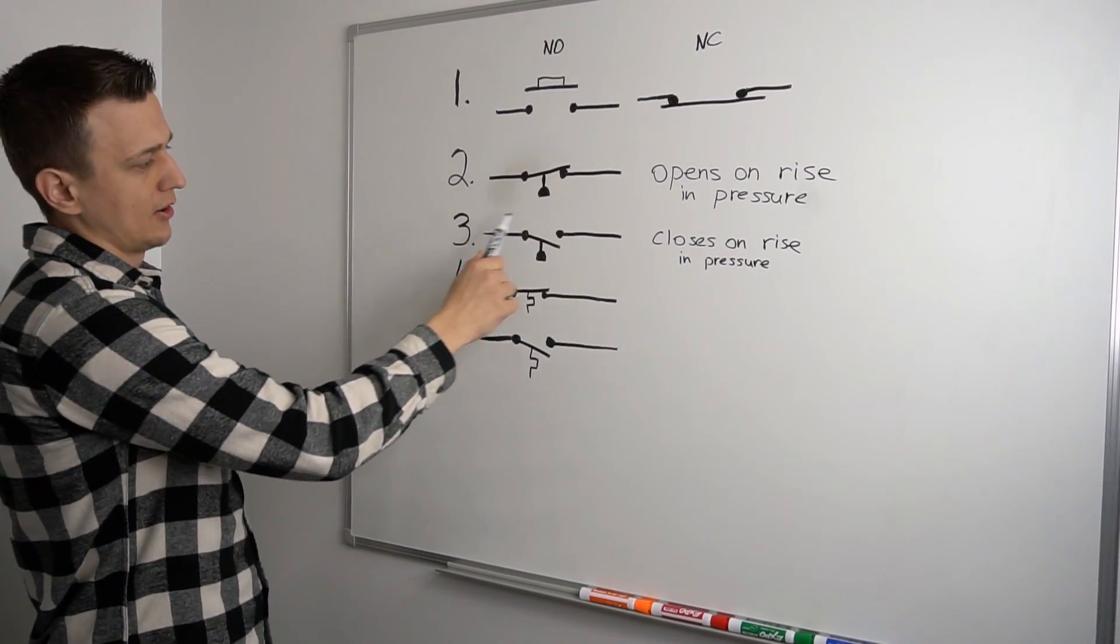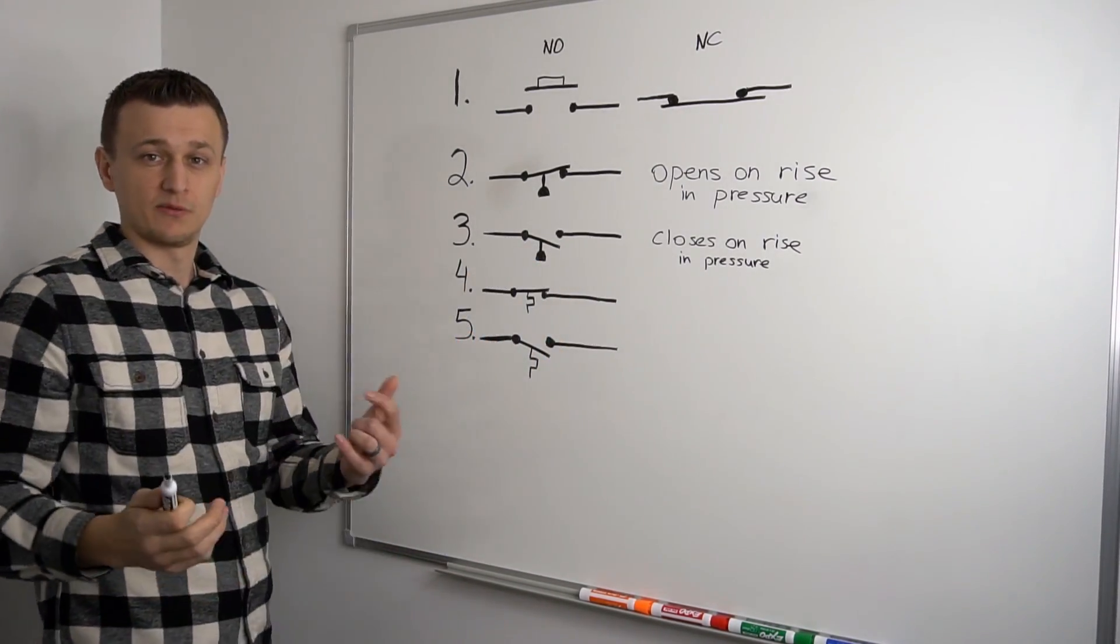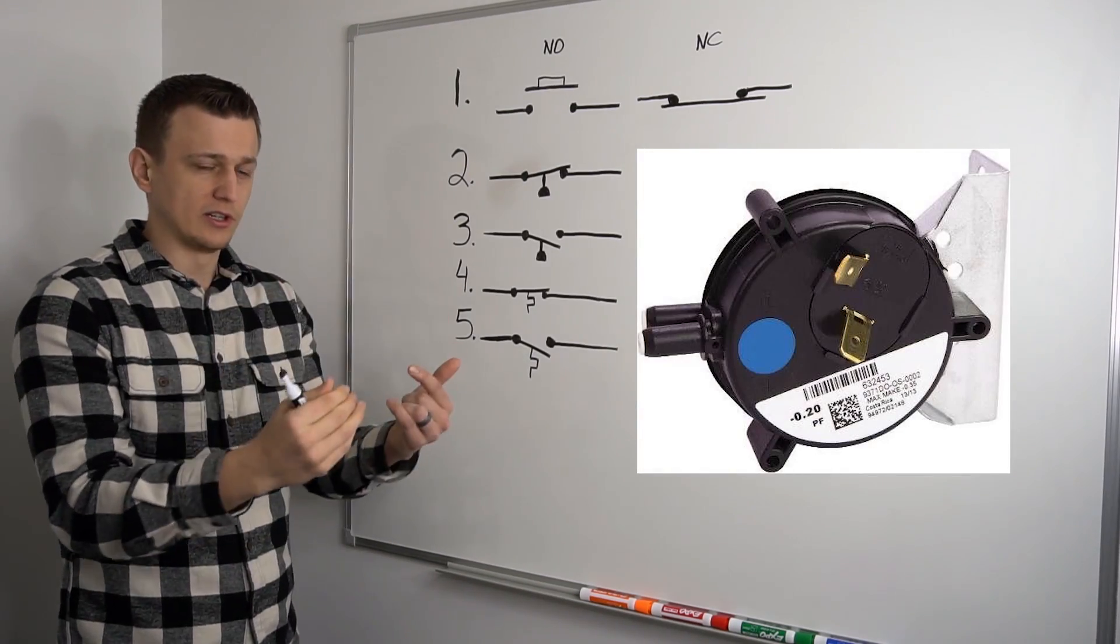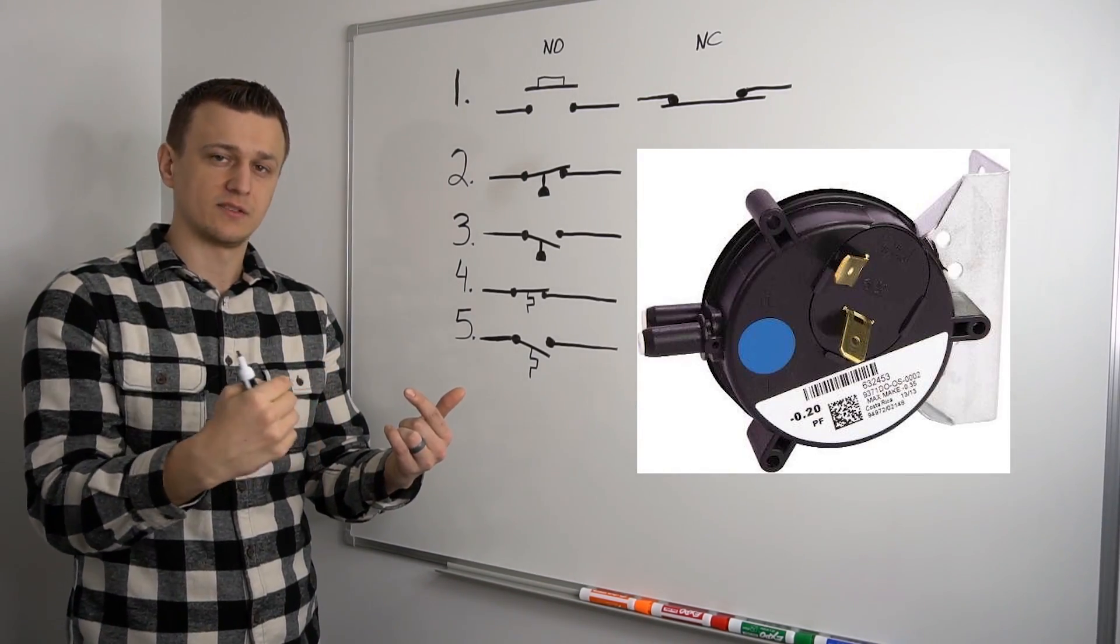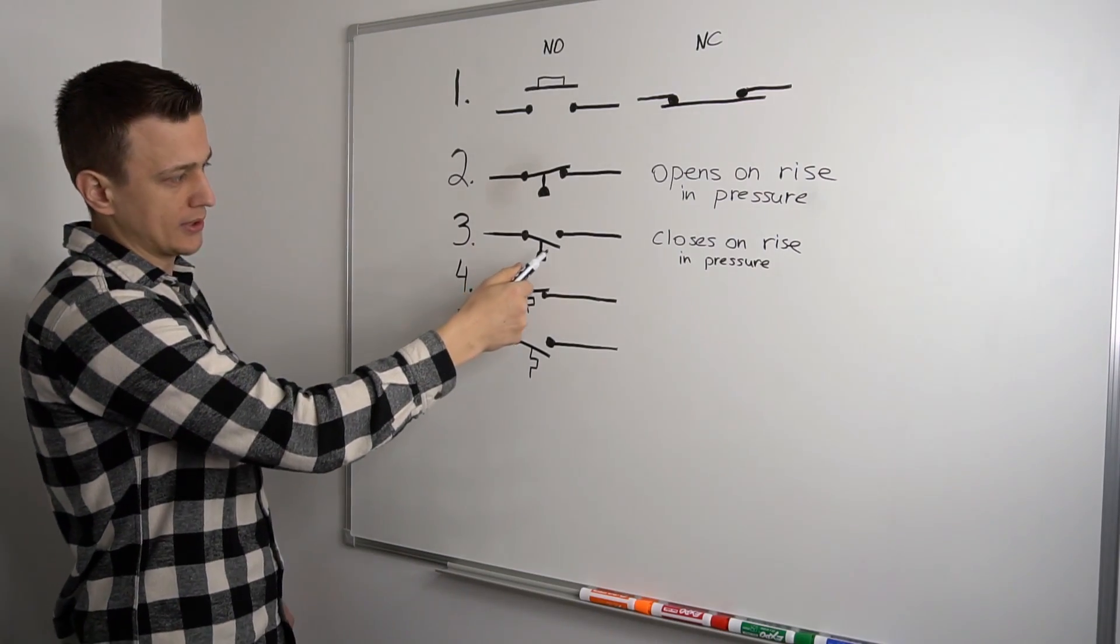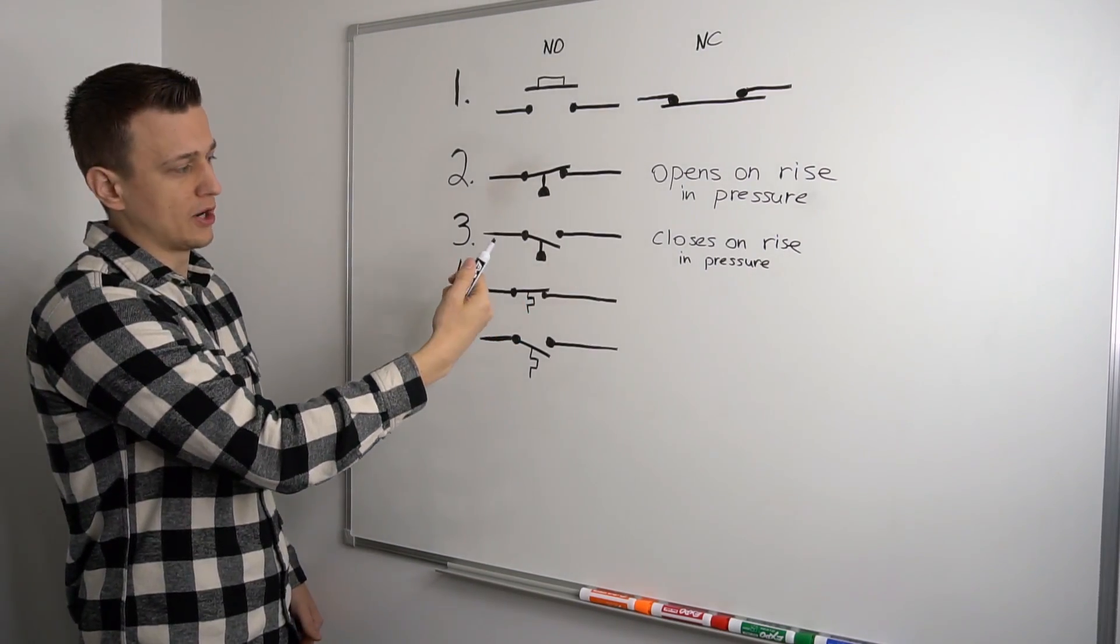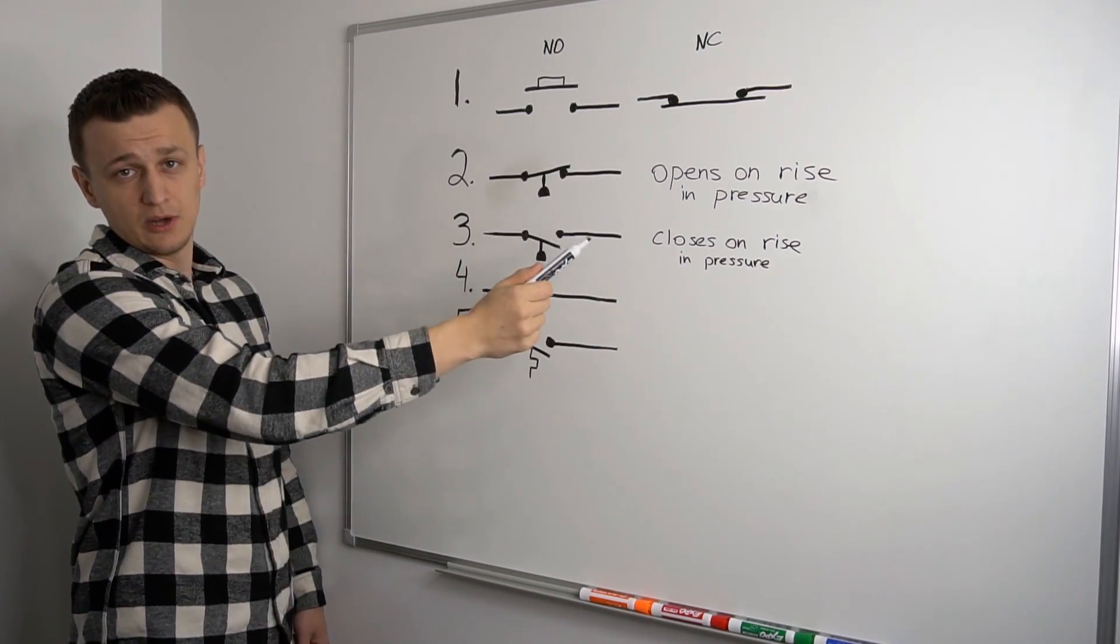So an example of this, a normally open pressure switch would be in the furnace. So the inducer motor turns on. And in order to prove that there's a draft that it's venting properly, this normally open pressure switch, the air pressure will close it and allow the power to go through.